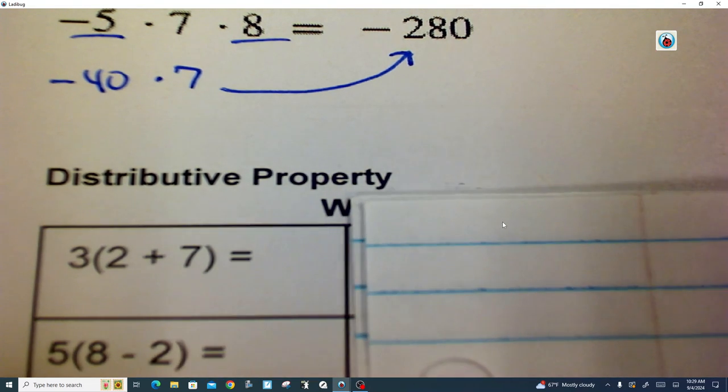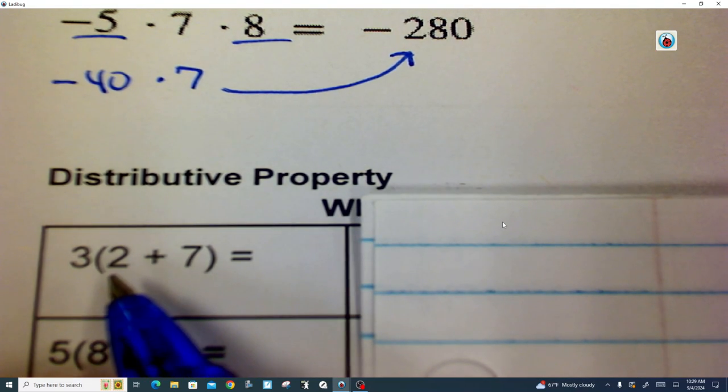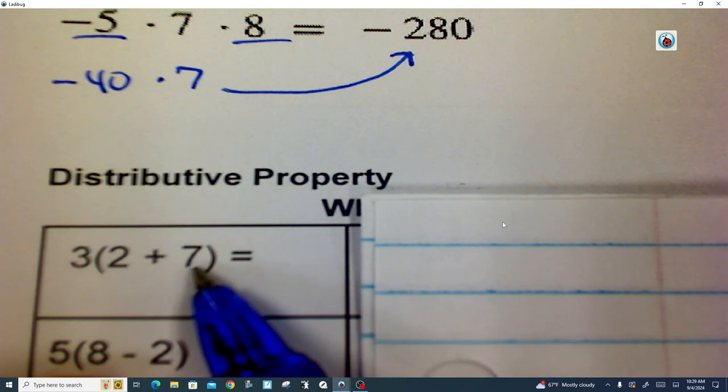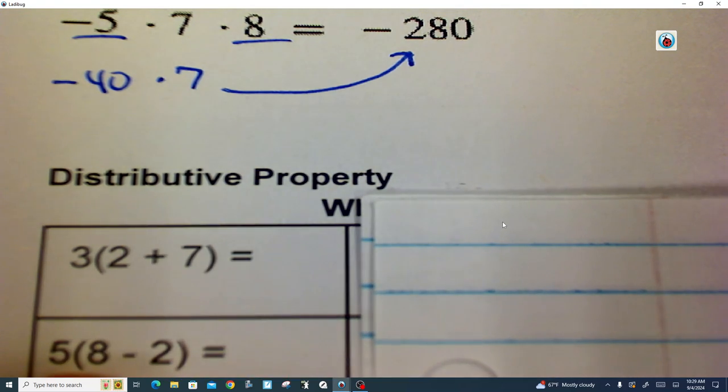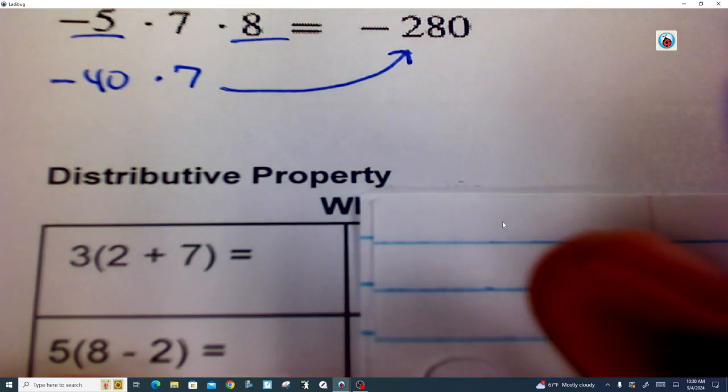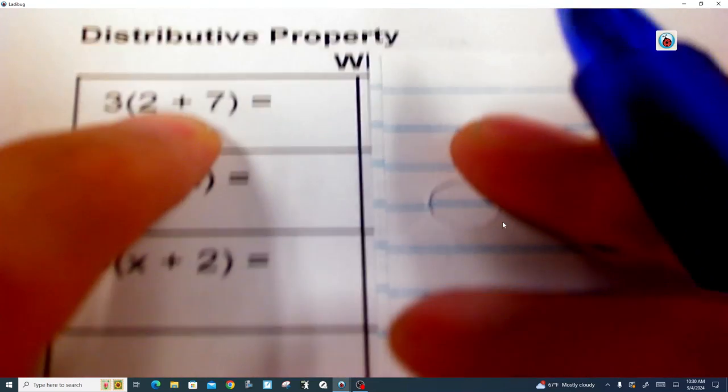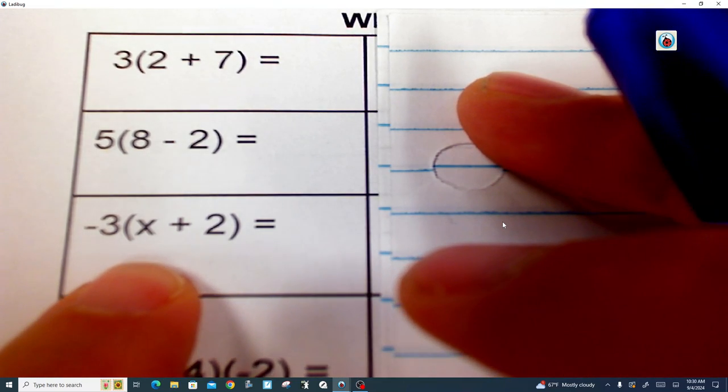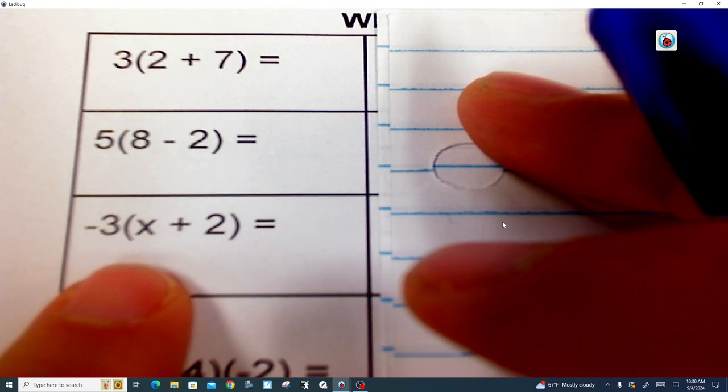Now the next thing that we need to get into is the distributive property. And looking at the order of operations, 2 plus 7 is 9, and 9 times 3 is 27. So that's our final answer. But we need to teach you how to work with these, so that way when you come down and you have a letter, you'll know how to handle it. So I'm going to show you the distributive property.